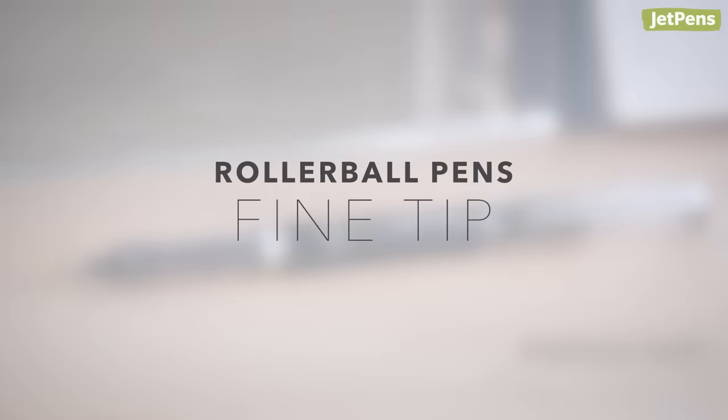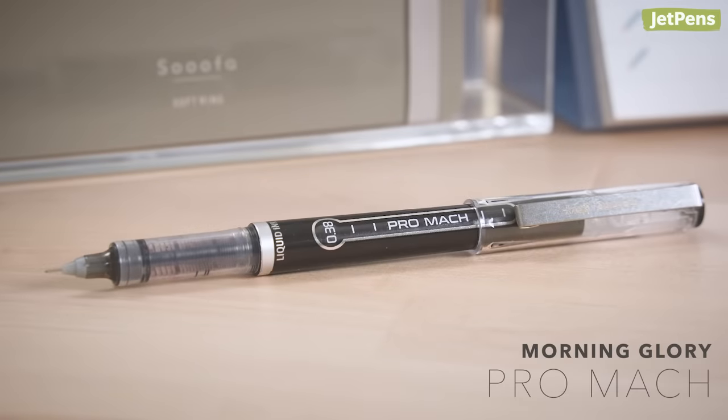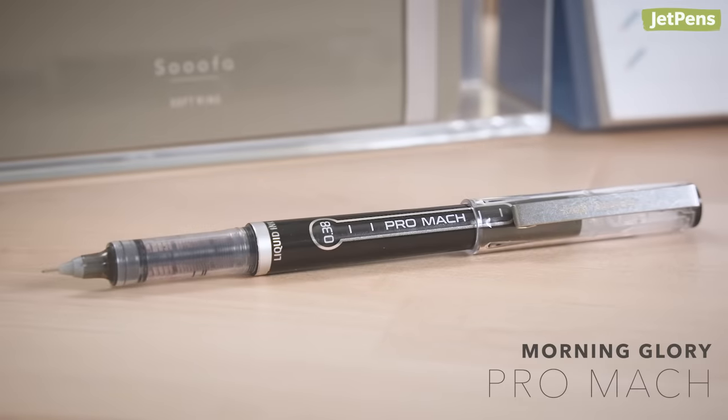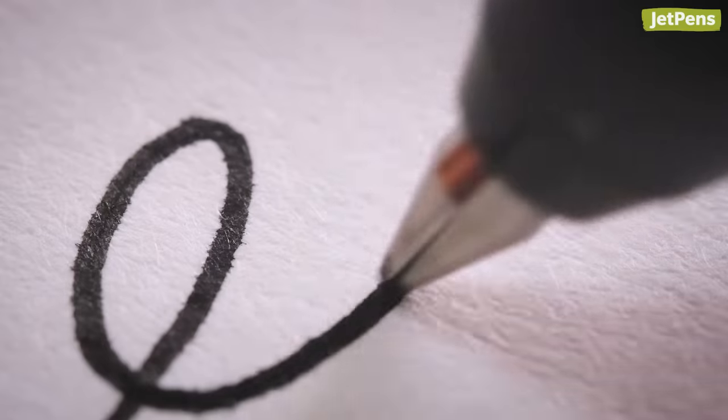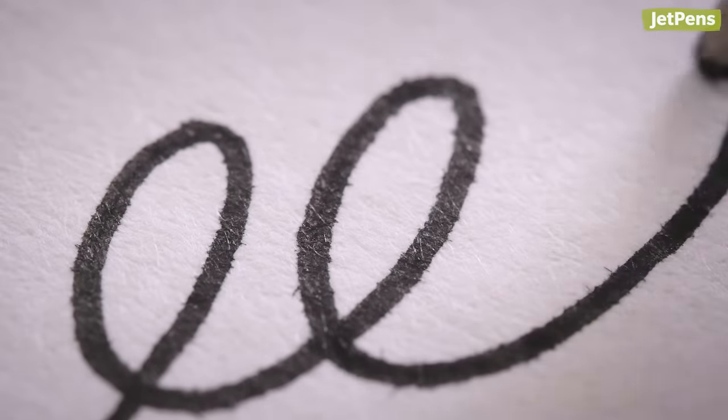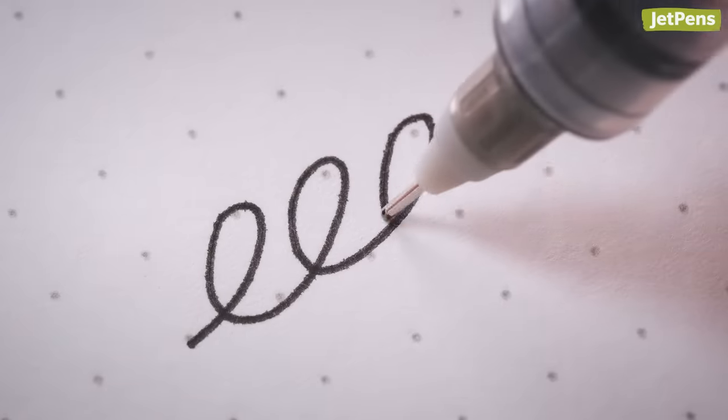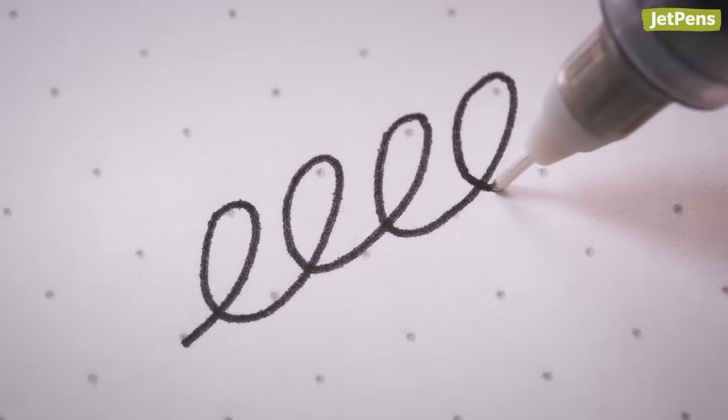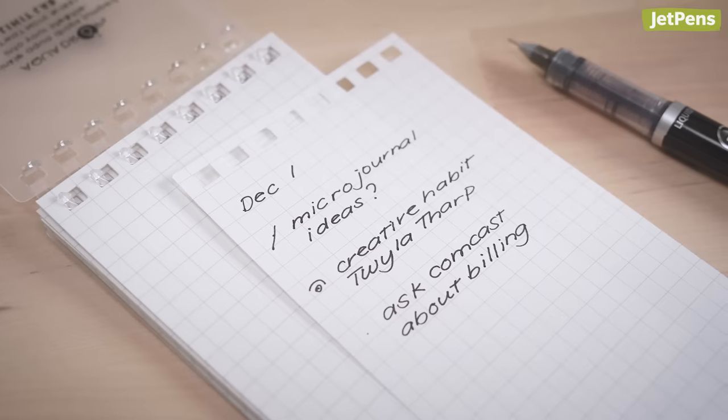Fine Tip. For crisp, neat lines, the Morning Glory ProMock is more than up to the task. Water-based rollerball inks tend to spread a little on the page, but we found that the ProMock's ink stayed surprisingly true to its 0.38mm tip size.